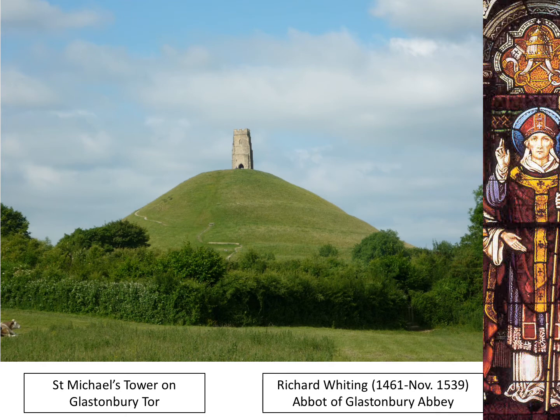What we're going to do now is go through a story that starts in Germany and ends up at Glastonbury with the death of Abbot Richard Whiting. In the process we're going to discover where some of these religious tensions between Catholics and Protestants might come from.